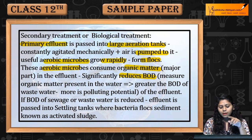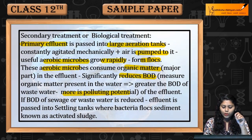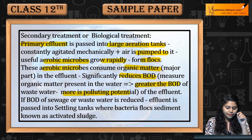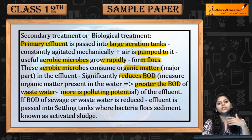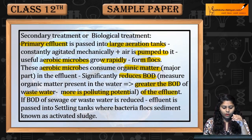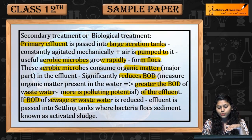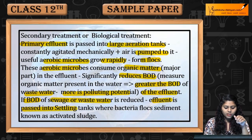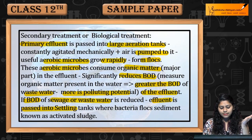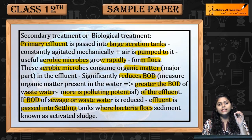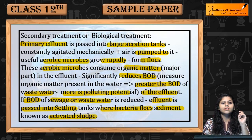कम Biological Oxygen Demand means कम Polluting होगा; ज्यादा Biological Oxygen Demand means ज्यादा Polluting होगा, तो इसमें Effluent की BOD कम होती है. If Biological Oxygen Demand of Sewage और Waste Water is Reduced, then Effluent is passed into Settling Tanks. जहाँ पे Bacteria Flocs Sediment करता है, इसे कहते हैं Activated Sludge.